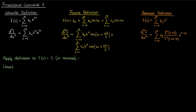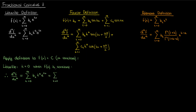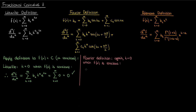If we apply the Liouville definition, writing my constant function as a sum of exponentials means k is just zero. So according to the Liouville definition, the derivative of f will be zero — this is, of course, what we like to see. Similarly, if we apply the Fourier definition of a fractional derivative, the fractional derivative of a constant function will also be zero, because k is zero when I express my constant function in terms of sines and cosines.